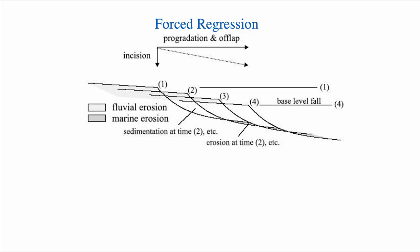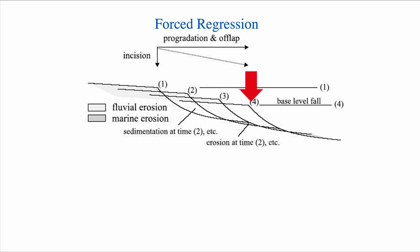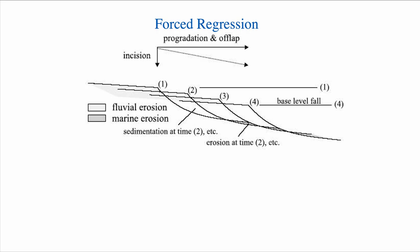So what is a forced regression? A forced regression is when base level falls. In this diagram, you can see that base level falls from its position at number one to its position at number four, with progressively lower base level from one to four, just like we saw in our model. Because base level is falling, all the facies are forced to migrate towards the basin center — just like our beach deposits, which are only deposited where we have lots of wave energy. These deposits shift towards the basin center — that's a forced regression.